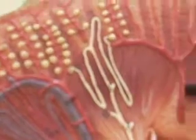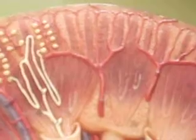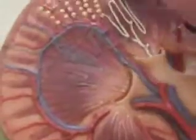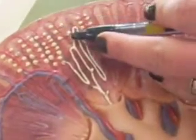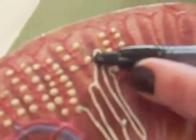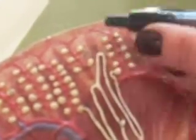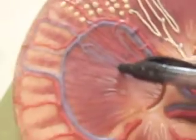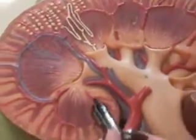Number thirteen is the interlobar arteries — you can see they come in between the pyramids and fan out into the cortex. Number fourteen we have the afferent arteries going into the glomerulus, and number fifteen we have the efferent arteries coming out of the glomerulus. Number sixteen is your capillary beds, and number seventeen is the interlobar vein.